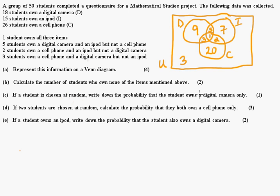All right, so calculate - oh see we already predicted the question here - calculate the number of students who own none of the items above. So I just did the total number of students 50 minus 47 and that's going to be equal to three. Now if a student is chosen at random, write down the probability that the student owns a digital camera only. Well digital camera only is nine. There's 50 students, so it's just nine out of 50. You can leave it like that, it's simple probability.